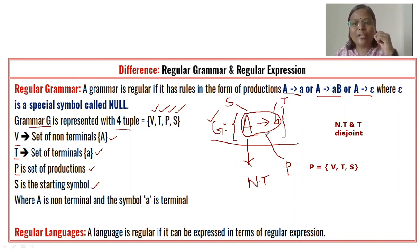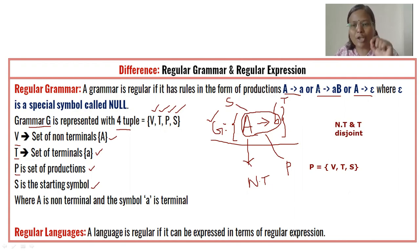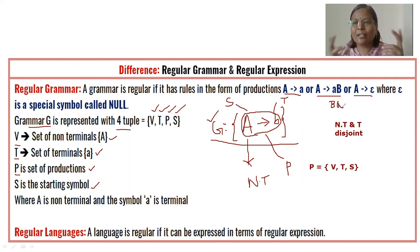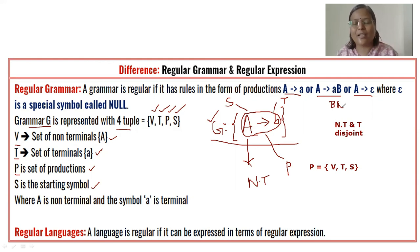Among all productions, we need to verify the three thumb rules: every production is of the form non-terminal produces terminal; non-terminal produces terminal followed by non-terminal; or non-terminal produces epsilon (empty/null). With that, I am concluding the introduction of regular grammar. We will look at problems related to regular grammar in the forthcoming video. Thank you for watching.